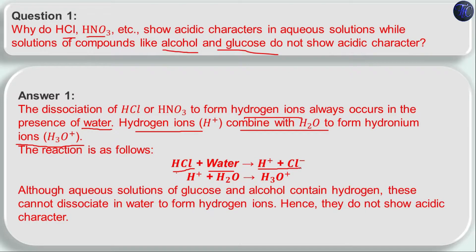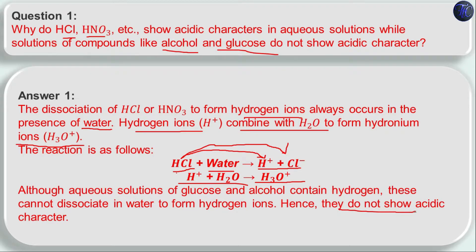Although aqueous solutions of glucose and alcohol do contain hydrogen, when they are dissolved in water they do not form H⁺ ions. Since only compounds that separate H⁺ ions are acids, and glucose and alcohol do not separate H⁺ ions, we cannot call them acids — that is why they do not show acidic character.